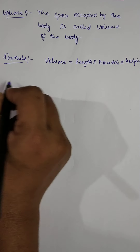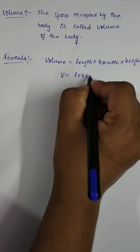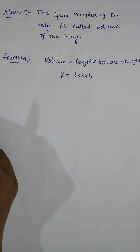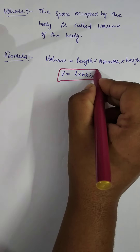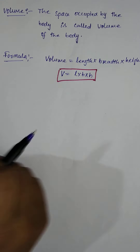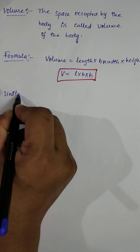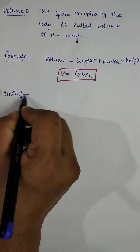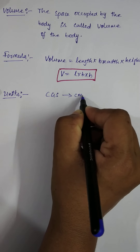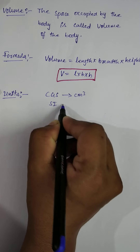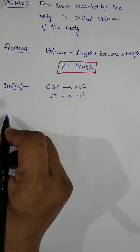V = Length × Breadth × Height. This is the formula for volume. Now, units: the CGS unit of volume is centimeter cube, and the SI unit of volume is meter cube.